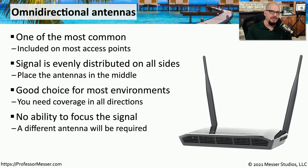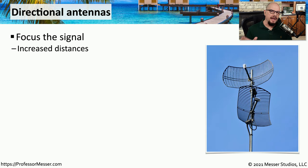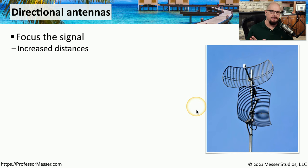However, if the access point is in the corner of a building, an omnidirectional antenna is probably not the most efficient, because you have no way to focus the signal into the parts of the building where it would be used. If you want to change how the signal is being sent and received, you can focus it by using a directional antenna. Directional antennas allow you to focus where the signal is going, and in some cases can increase the distance over which you can send or receive that signal.